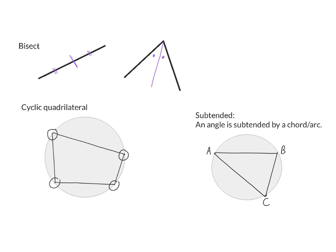A last important term you need to understand is the word subtended. We will usually say an angle is subtended by a specific arc or chord. If we look at our picture, we can say that angle A is subtended by chord or arc BC — that means it is formed from there. So angle A is clearly formed from the chord or arc BC.